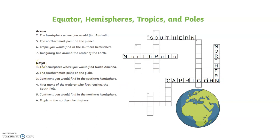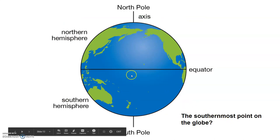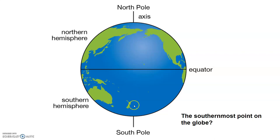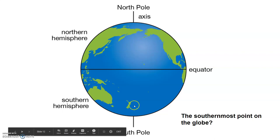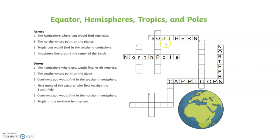Two down is right here going down, and look — we have two letters that have to match. The question is: the southernmost point on the globe. The southernmost means from the equator the furthest it can go south until it has to stop. So the very farthest south — the southernmost point on the globe — is the south pole. Let's see if it fits. It sure does — 'south pole' — and these two letters match up perfectly.